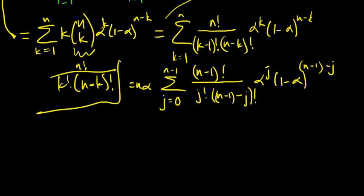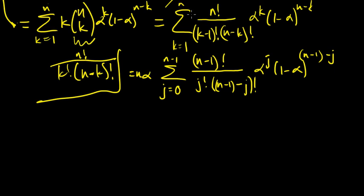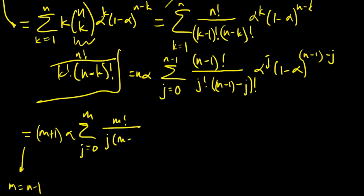So that equals that, and now let's let, just to make things crystal clear, let's let m equal n minus 1. So that equals n plus 1 times alpha, sum from j equals 0 to m of m factorial divided by j factorial times m minus j factorial, alpha to the j, 1 minus alpha to the m minus j.